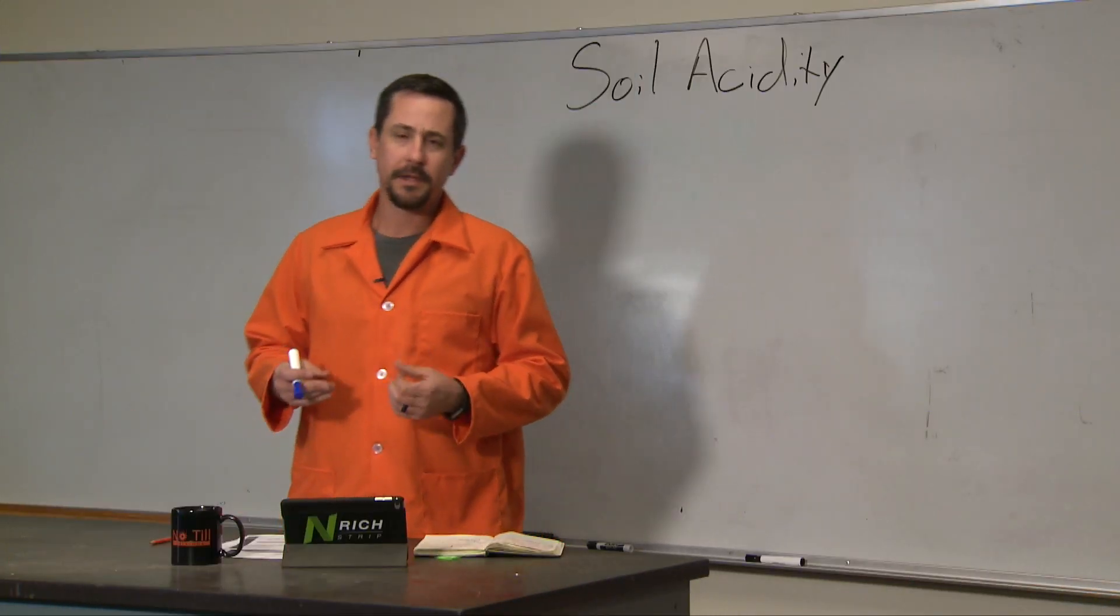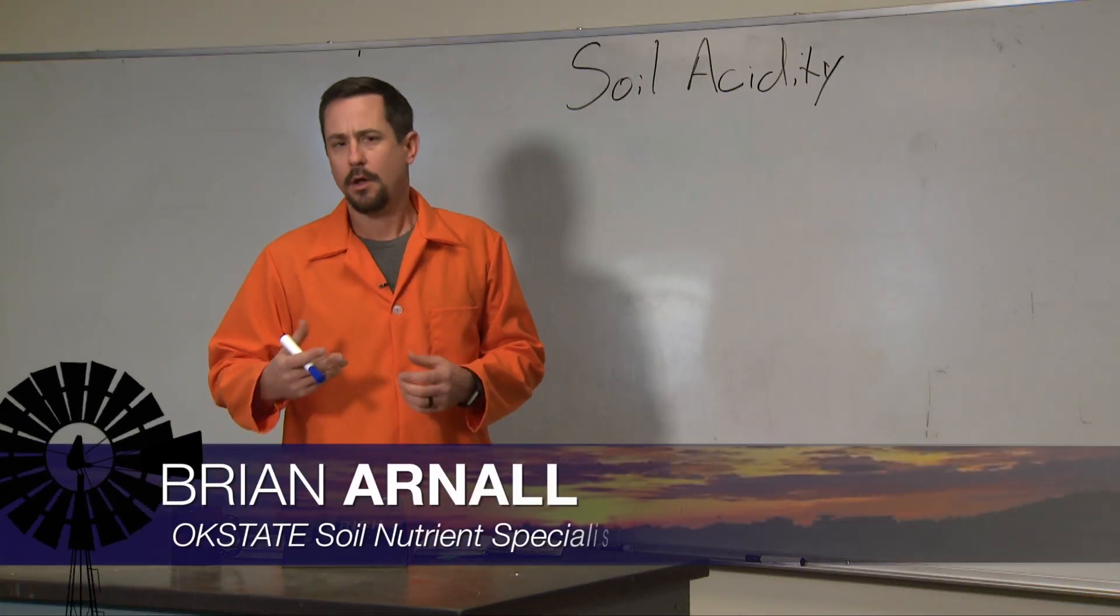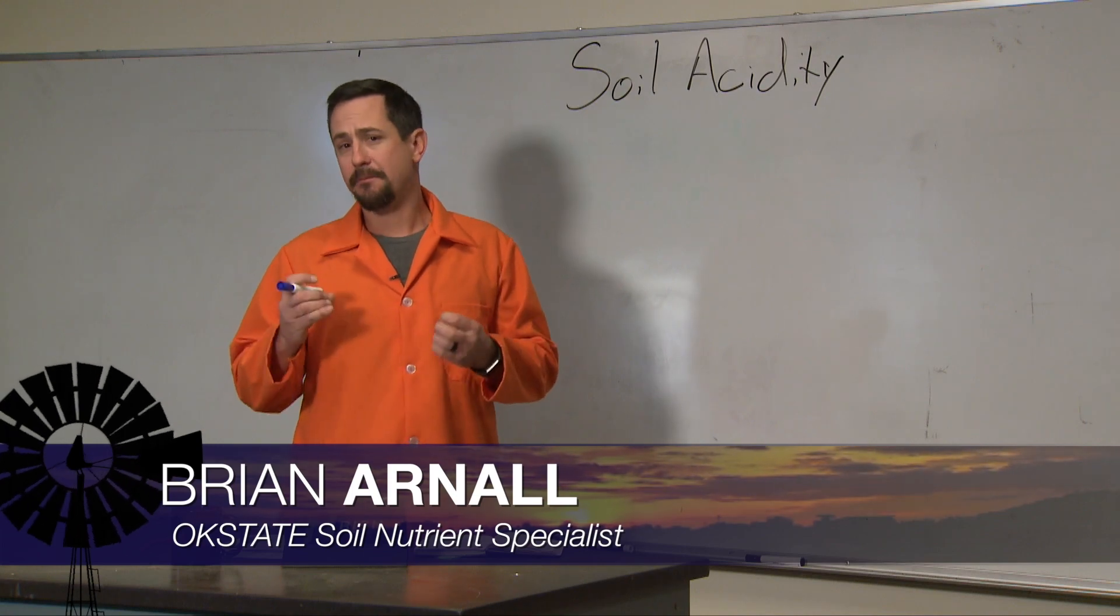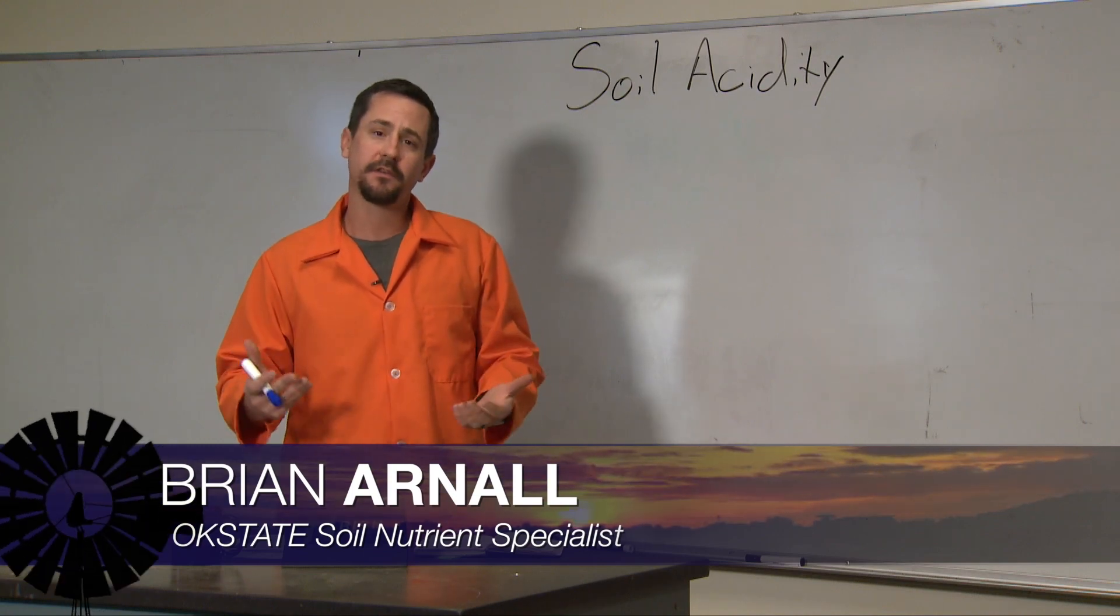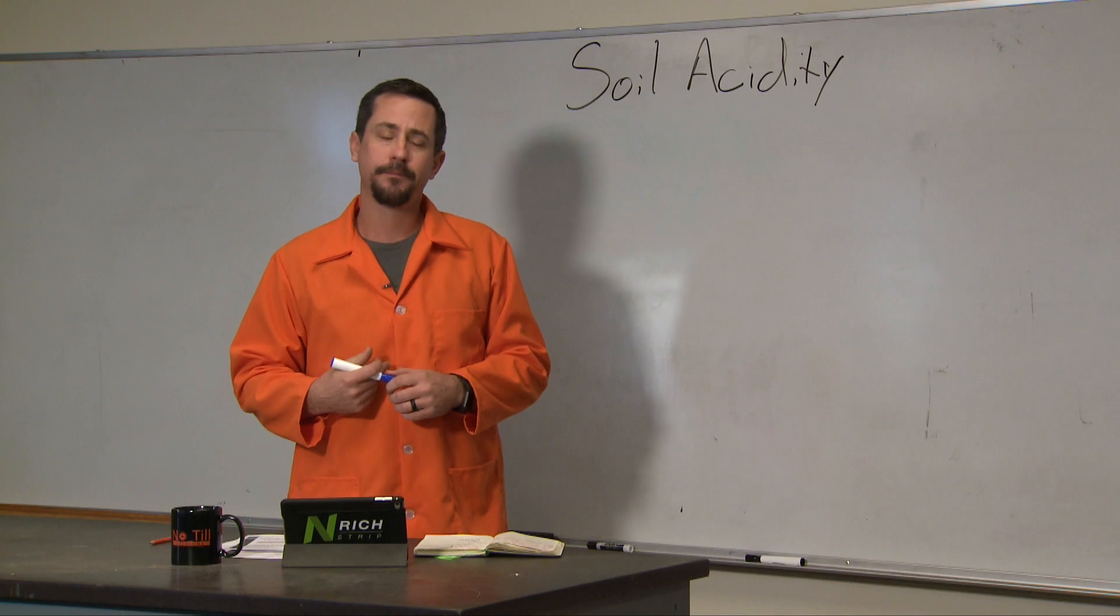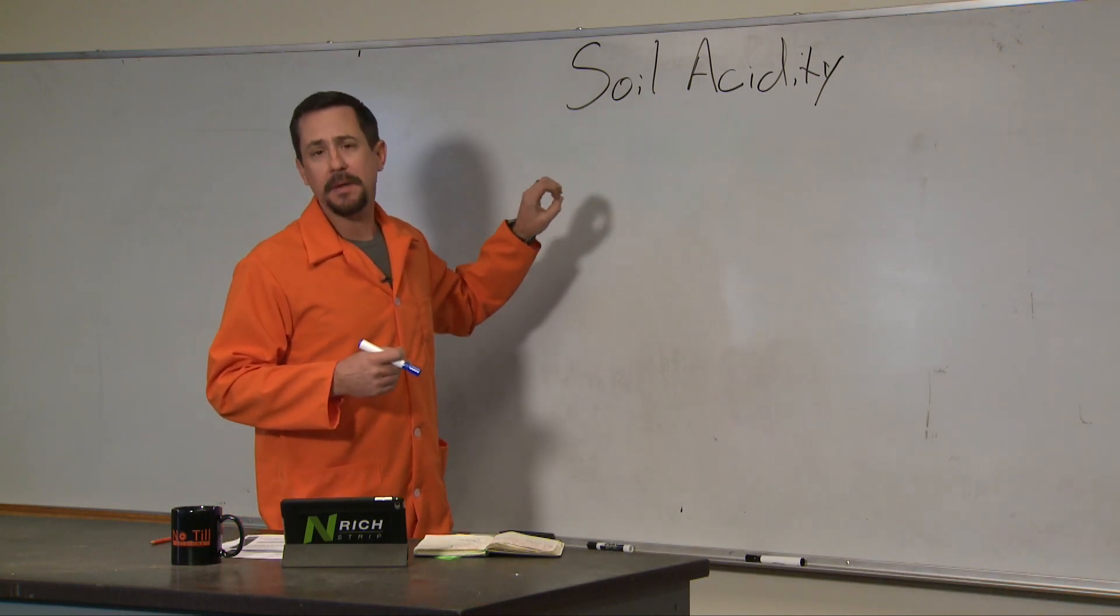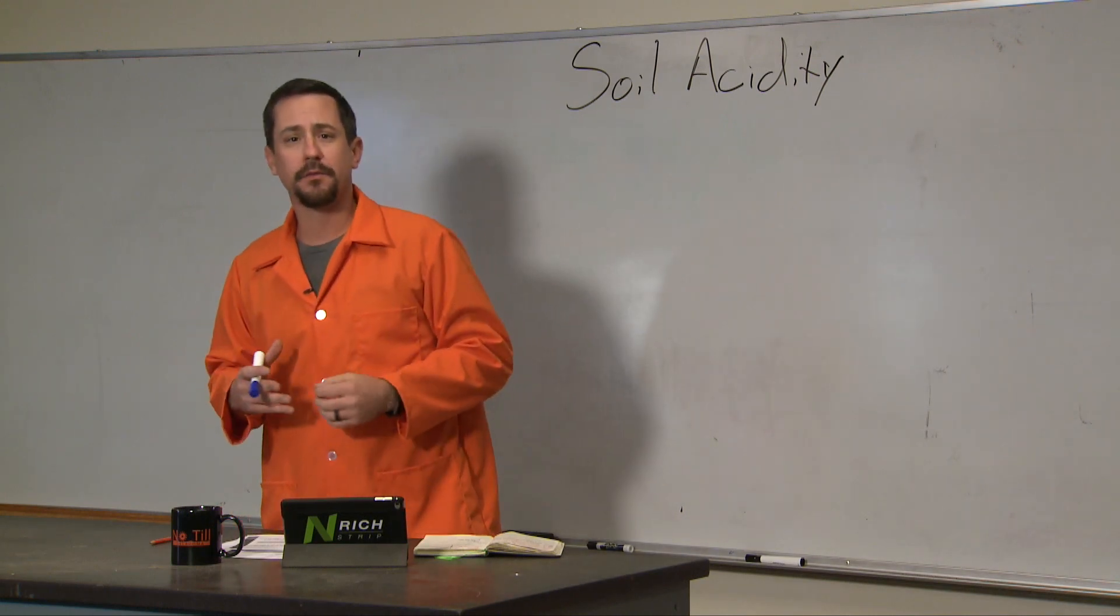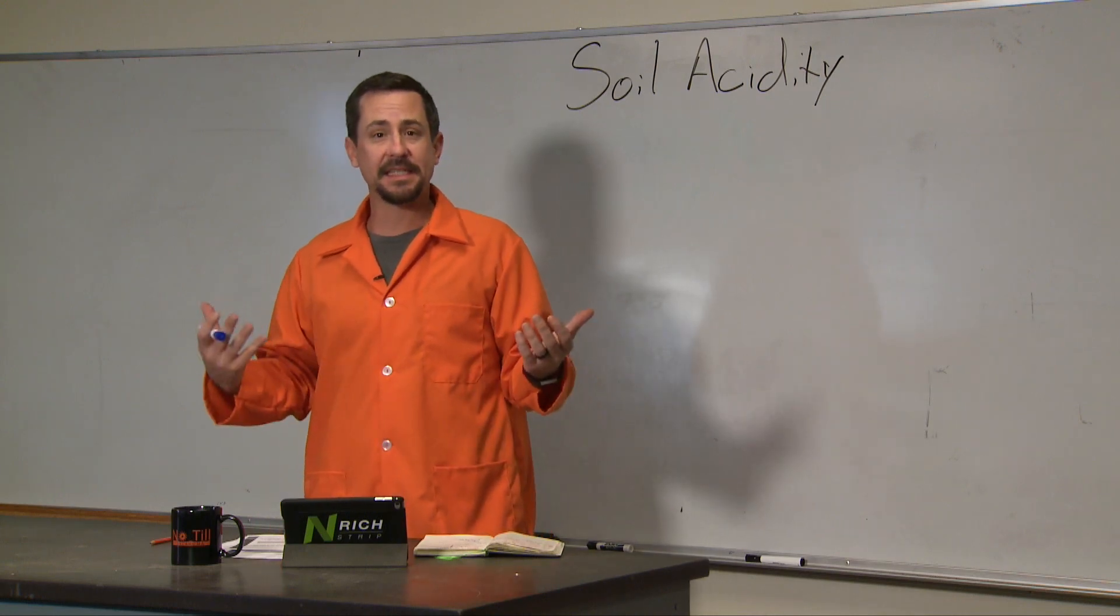I've previously spoken about soil pH. Now I'll address why low pH is a bad scenario in cropping systems and forage systems in Oklahoma. We call low pH acidic. That's when the pH drops below six for most crops.